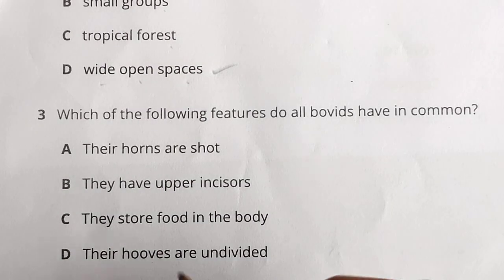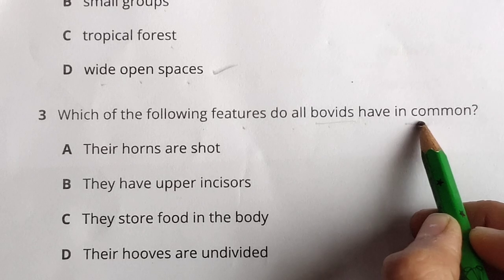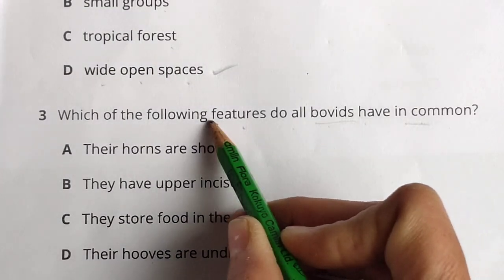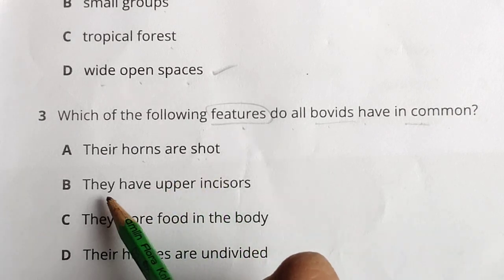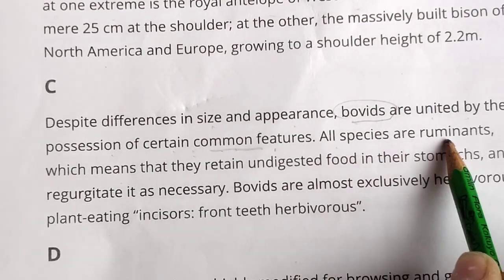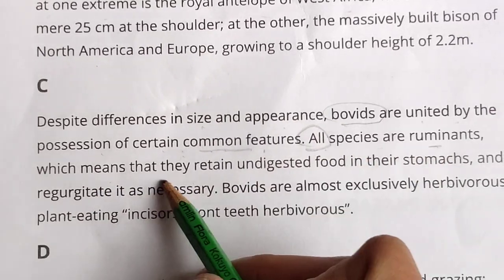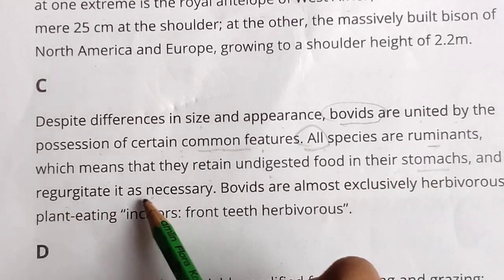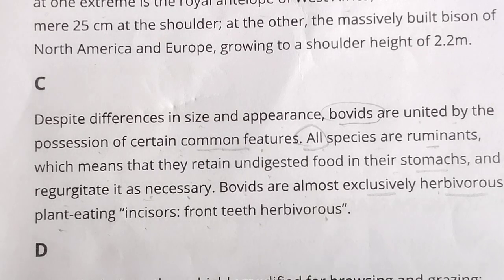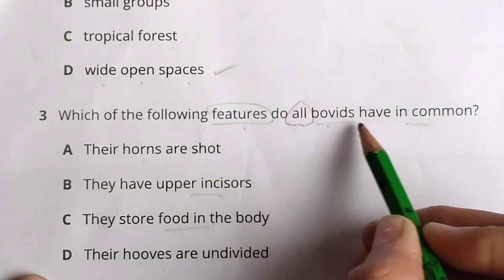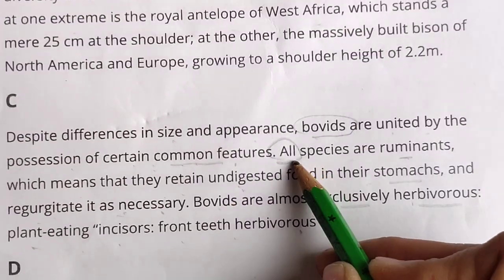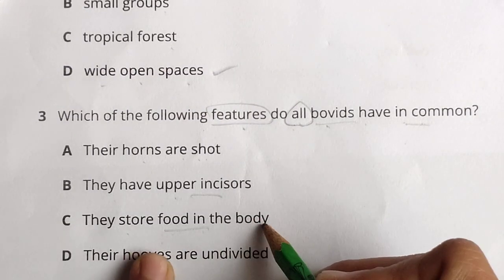The third question is: 'Which of the following features do all bovids have in common?' The options were: horns are short, they have no upper incisors, they store food in the body, or their hooves are undivided. In paragraph C it says all species are ruminants, which means they retain undigested food in their stomachs. Bovids are almost exclusively herbivorous. So the answer is: they store food in the body.